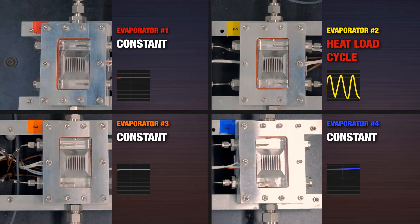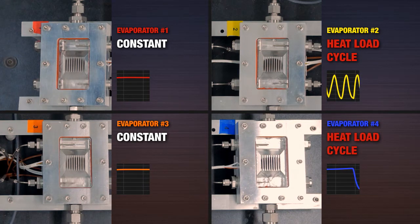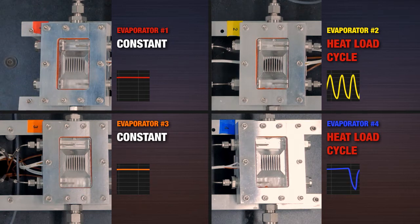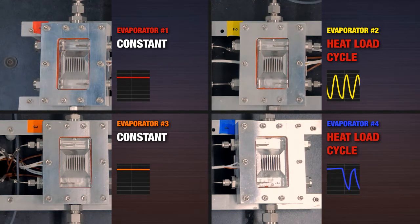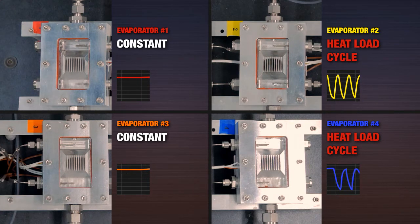We will now begin to cycle the heat load on evaporator four in a similar way as evaporator two. Again, we see erratic boiling at both two and four, but flow rate, temperature, and boiling remain constant for one and three.